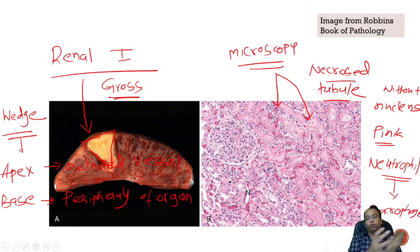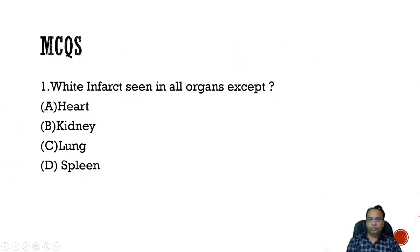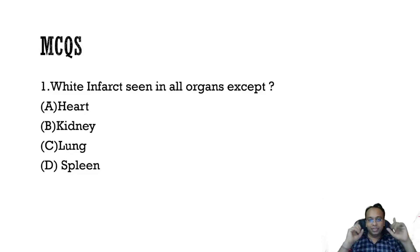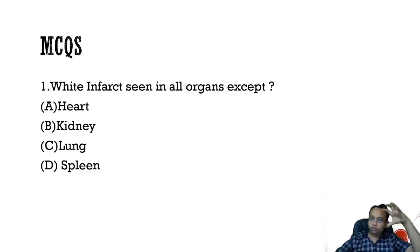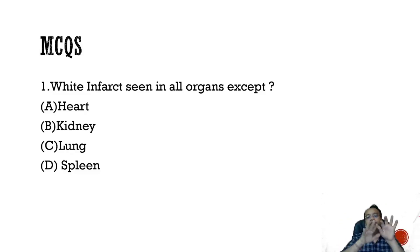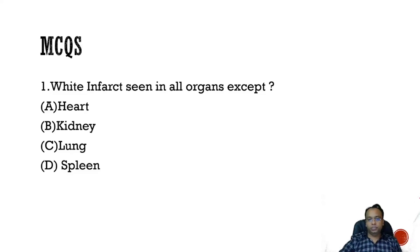Remember that in the liver, both types of infarction are seen — pale as well as red infarct — because it is a solid organ and also has dual blood supply. That is why both types of infarction are seen in liver infarction.